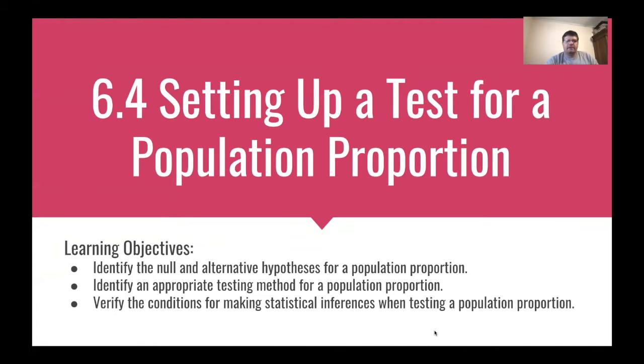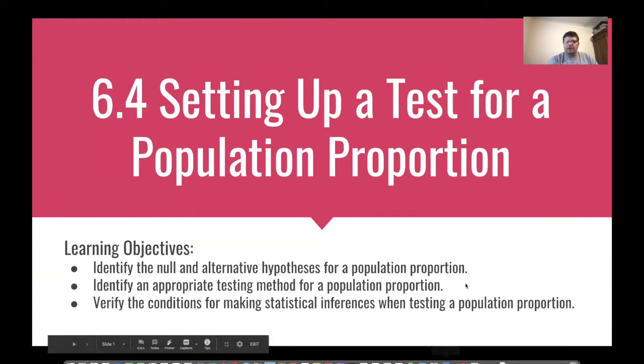Hello, welcome to lesson 6.4. In this lesson we're going to be talking about how to set up for a test on the population proportion. We're going to be talking about the notion of what's called a null and an alternate or alternative hypothesis and how we would set those up. We're also going to mention and talk about how the testing conditions would be necessary.